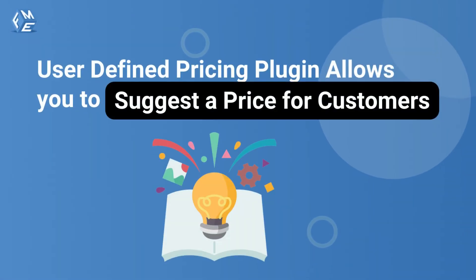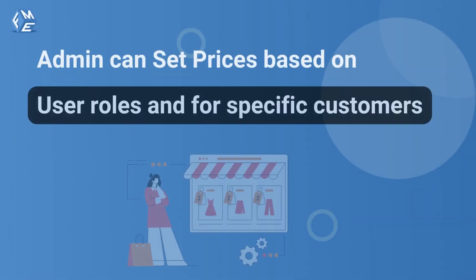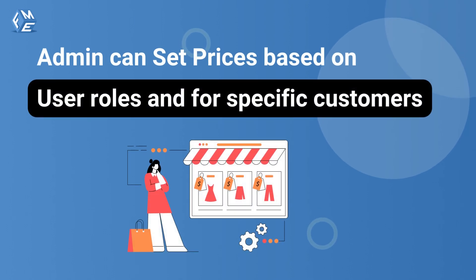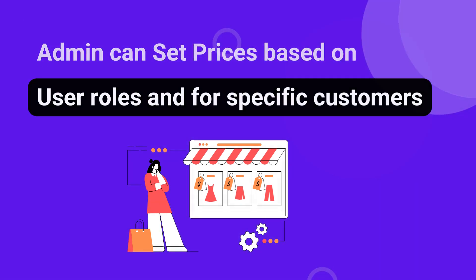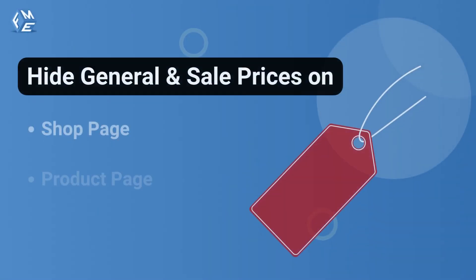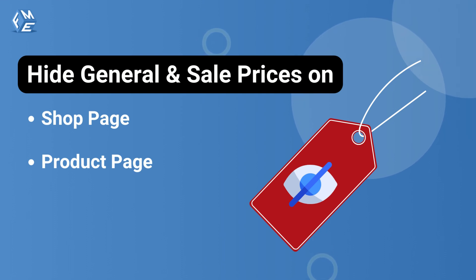This plugin allows you to suggest a price and let the customers decide what to pay for a product. The User Defined Pricing plugin enables the admin to set product prices based on user roles and specific customers. This plugin also enables you to hide the general price and sale price from the shop page as well as from the product page.